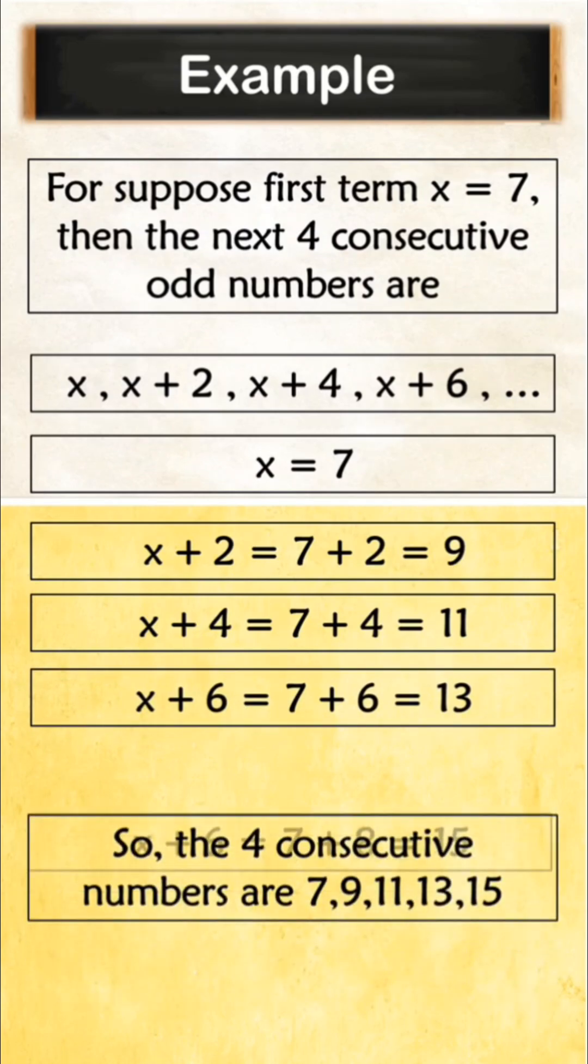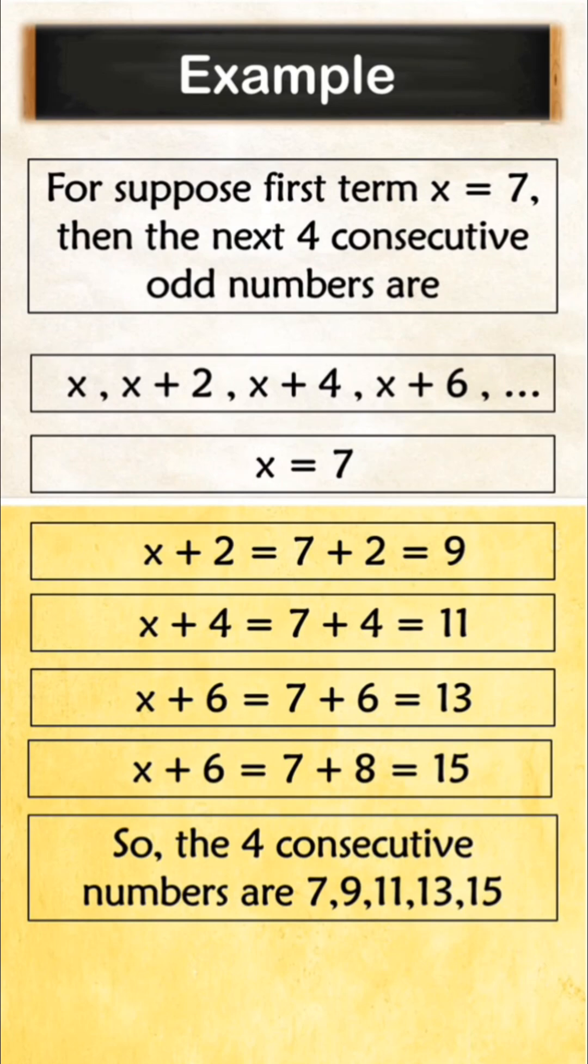So the 4 consecutive odd numbers are 7, 9, 11, 13, 15. In this way, you can find the next consecutive odd numbers.